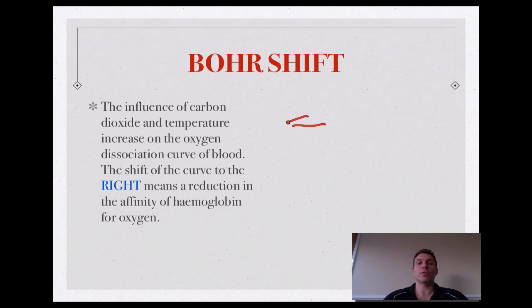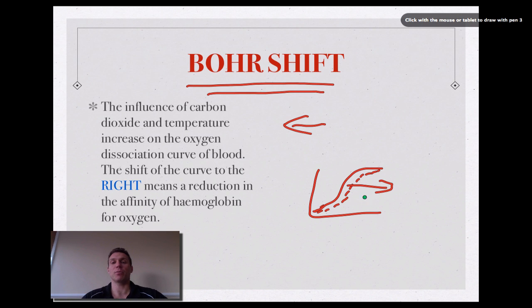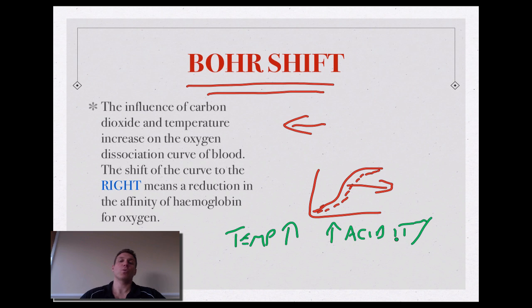So why is the Bohr shift so important? This Bohr shift is the question that's most often asked when you get given that diagram, the oxyhemoglobin dissociation curve, and then you're asked why there's a shift to the right. That shift to the right is exactly what we're talking about, and that is created by an increase in temperature and an increase in acidity, which means that a reduction in the affinity of hemoglobin for oxygen occurs. Therefore, it dissociates more readily, and then it can go to the myoglobin.